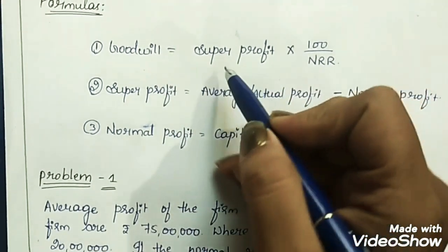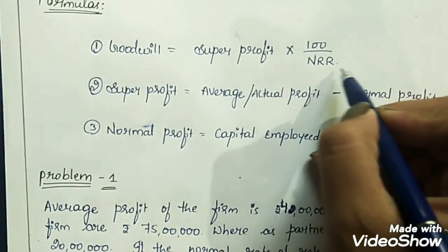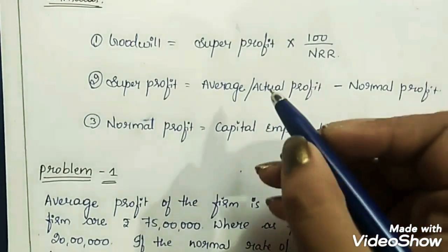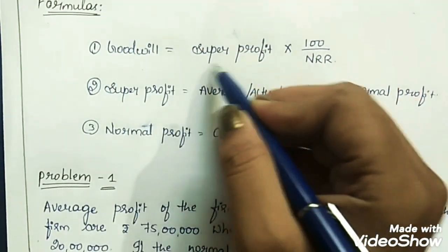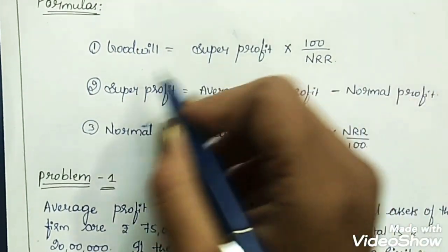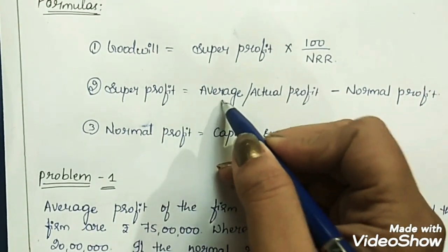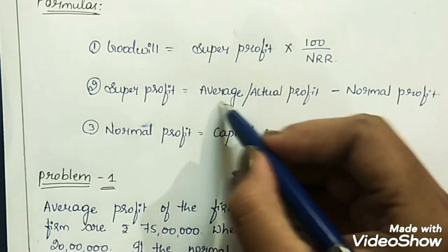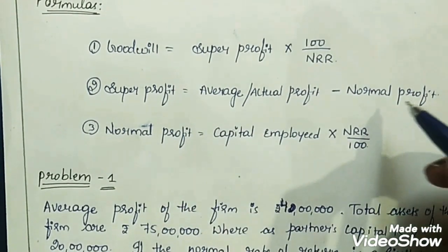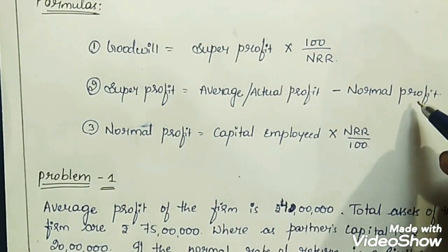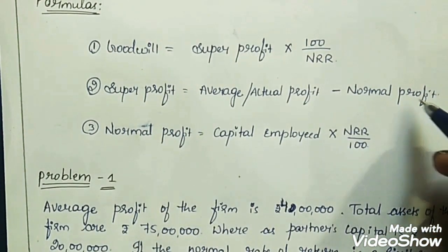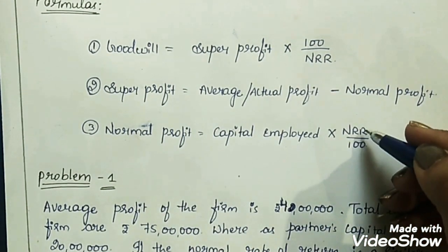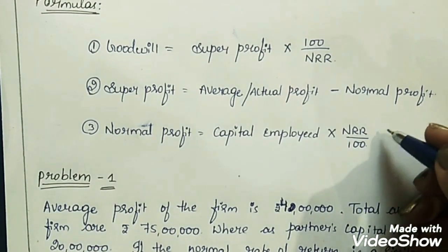For finding goodwill, the formula is: Super Profits × 100 ÷ NRR, where NRR means Normal Rate of Return. Now, in order to get goodwill we need super profits, so the formula for super profits is: Average or Actual Profits − Normal Profits. Average or actual profits will be given in the question. We also need to find normal profit, so the formula is: Normal Profit = Capital Employed × NRR ÷ 100.